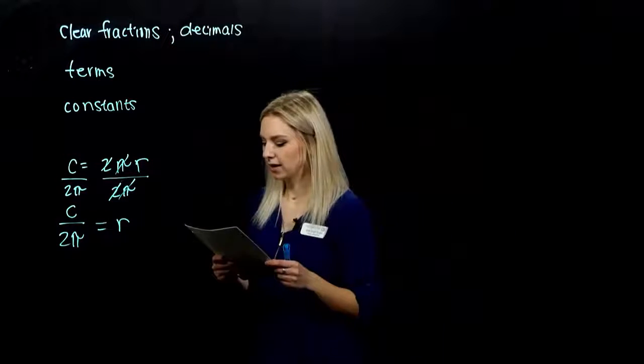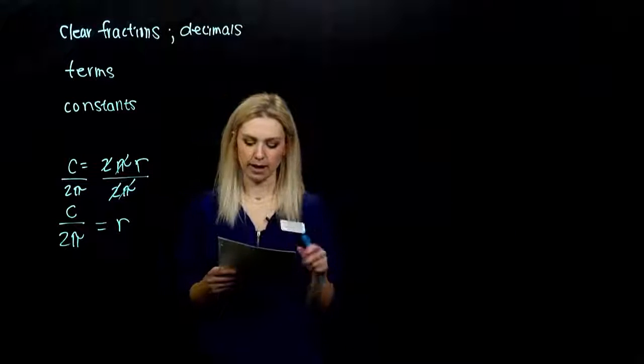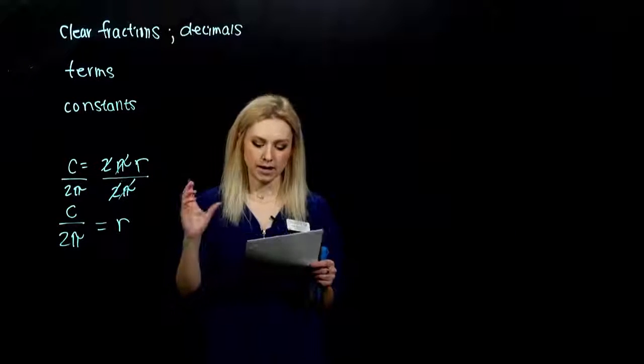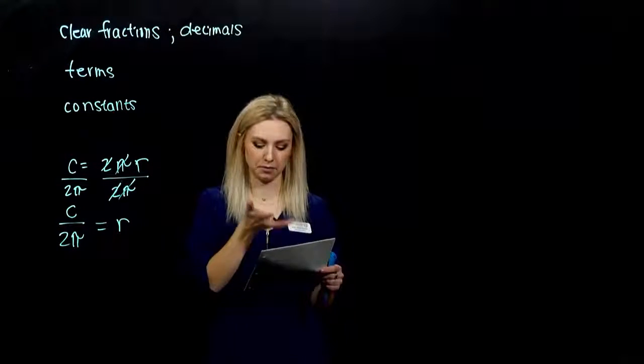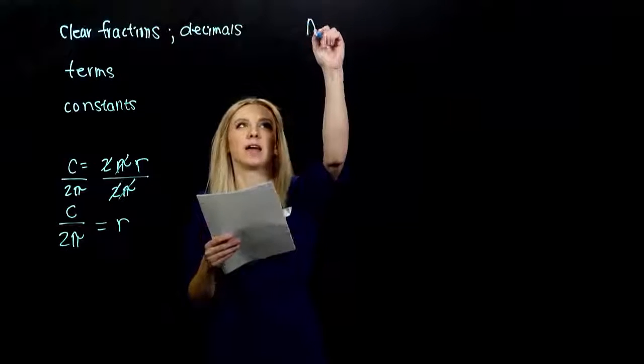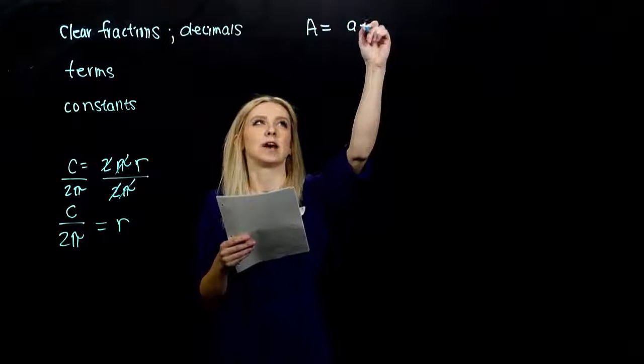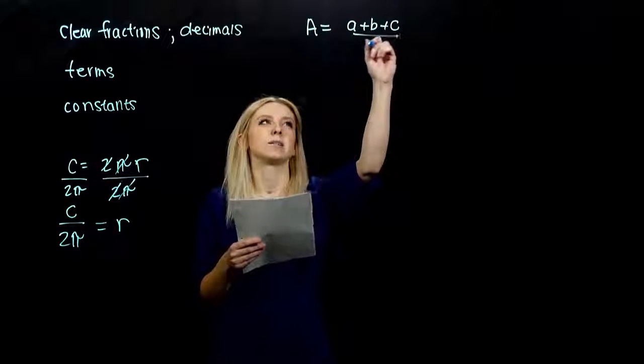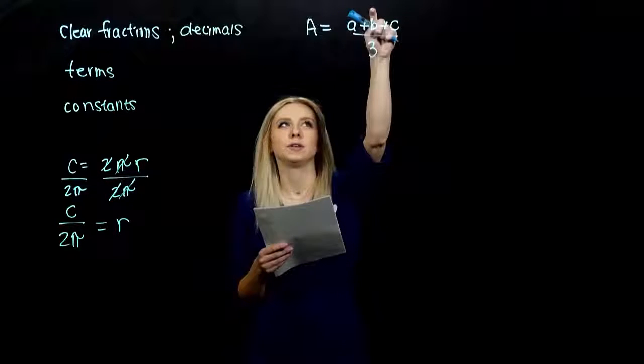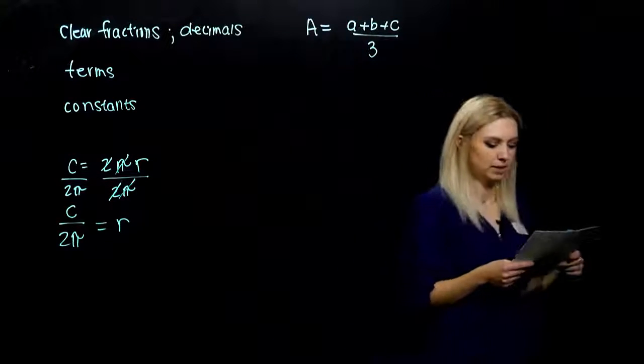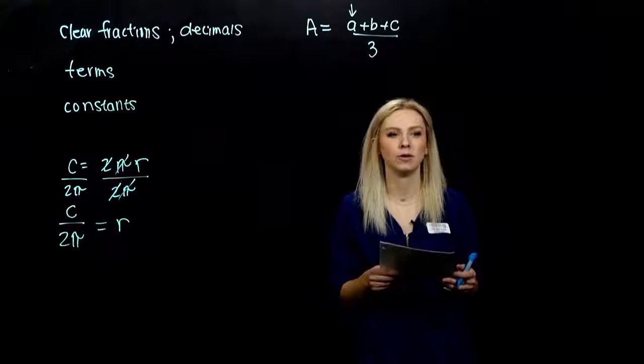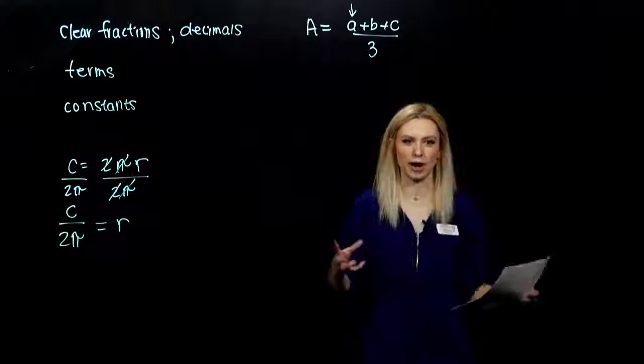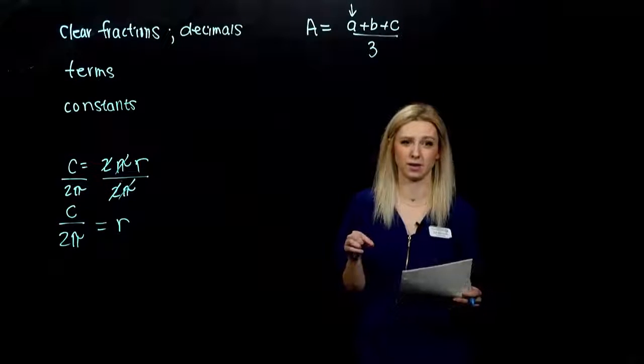So we want to find the average of three numbers, capital A, and the three numbers little a, little b, little c, as given by the formula there. So the average is adding the three together, dividing by the number of numbers that you have. We want to solve for little a. So I want to dig him out. But he's inside of this large fraction, so I need to take care of that first.